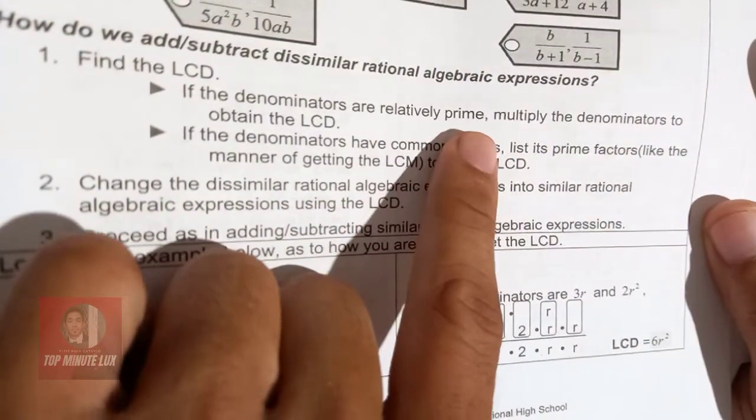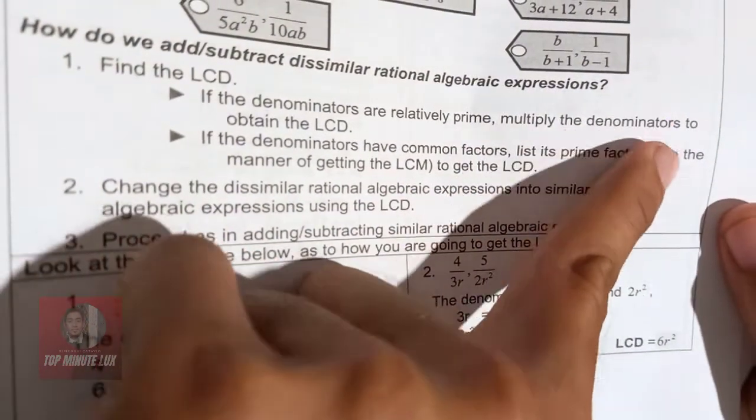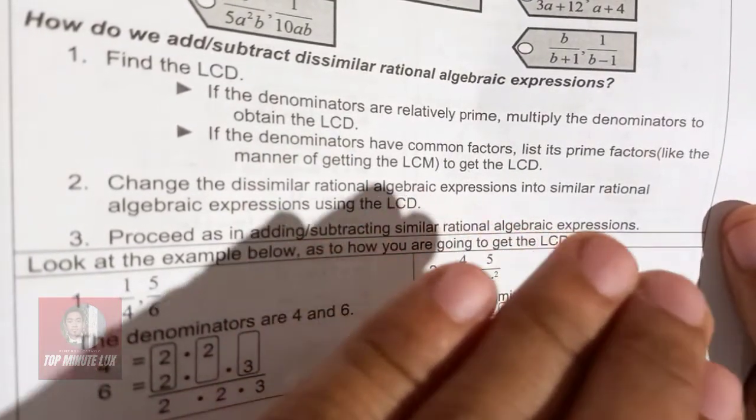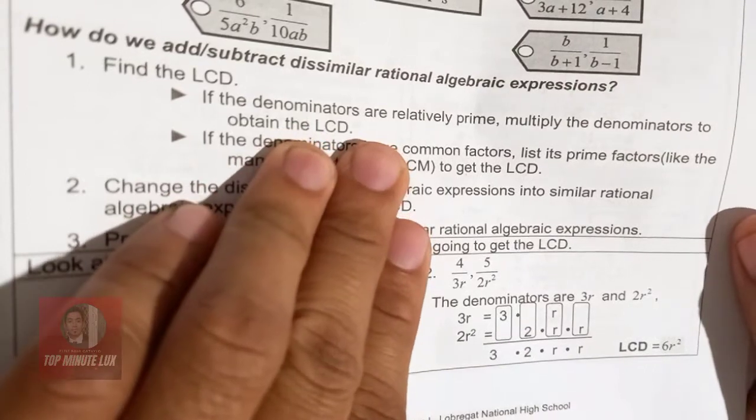So if denominators are relatively prime, multiply the denominators to obtain the LCD. If they are already prime, just multiply the denominators to get the LCD. That's the first rule.